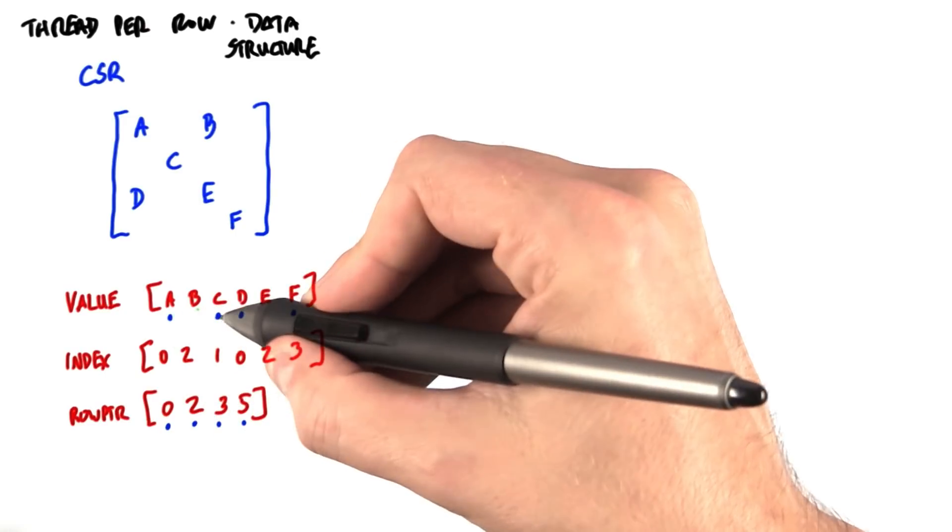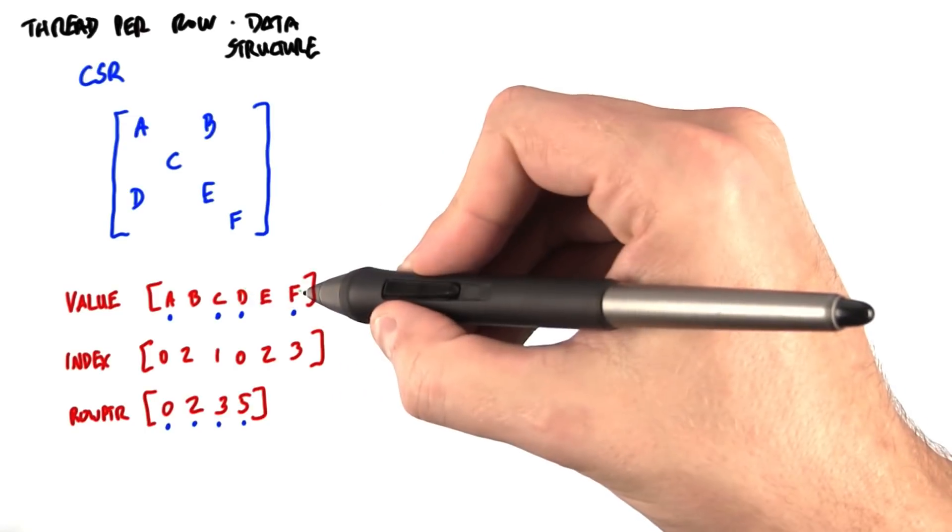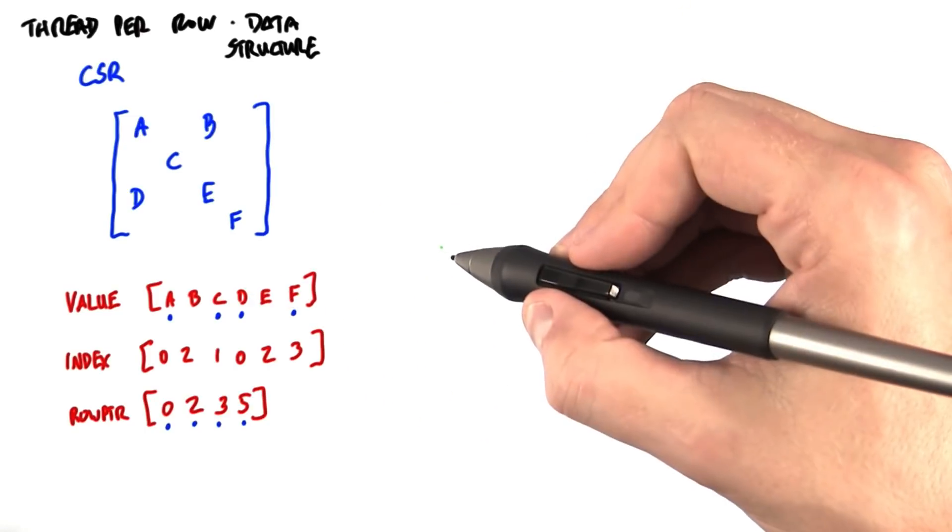So each blue dot here corresponds to the element that begins each row, which is element 0, 2, 3, and 5. So let's just walk through some code.